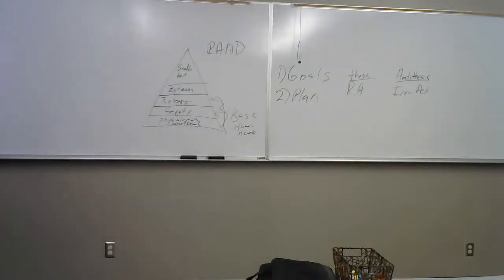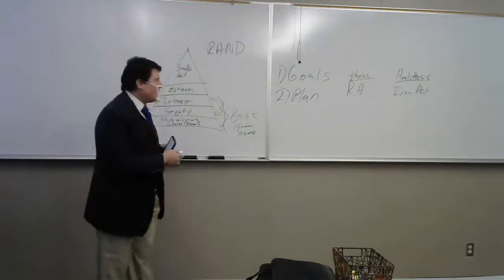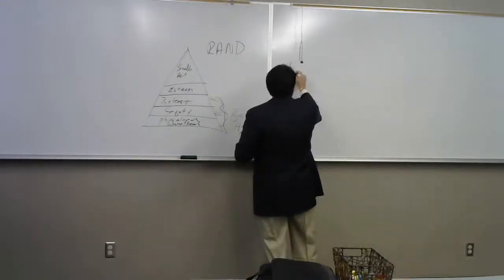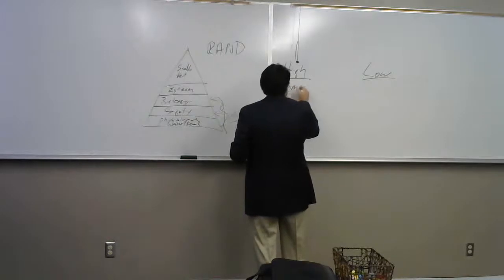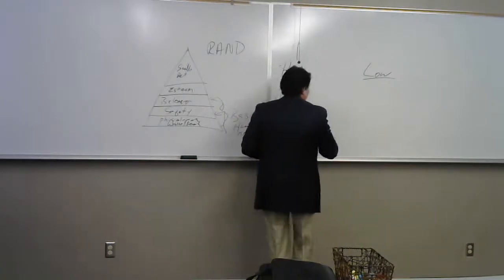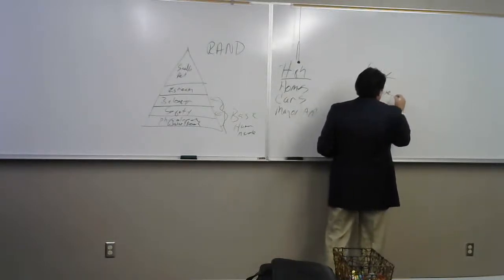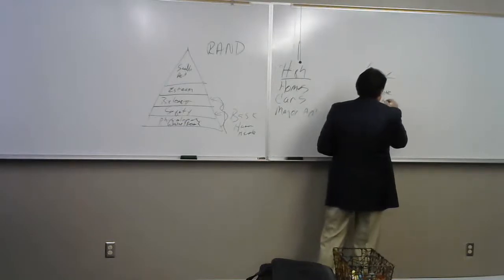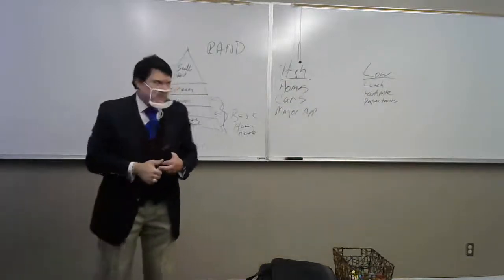The synthesis model is that with regard to high risk versus low risk, we have to look at high risk purchases versus low risk purchases. What are high risk? Things like homes, cars, major appliances. Low risk things like lunch, toothpaste, paper towels, things like that are low risk.